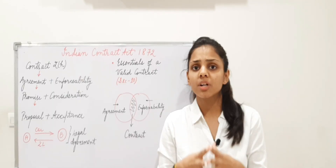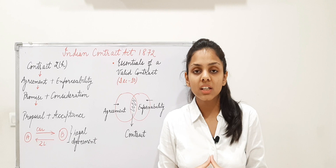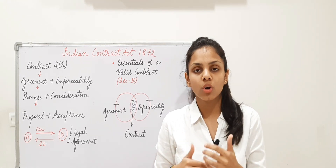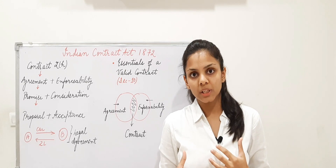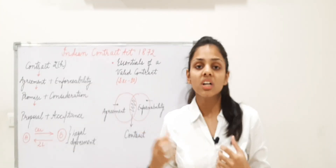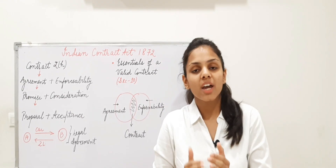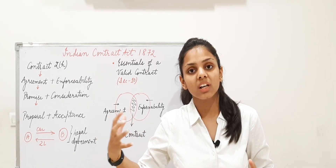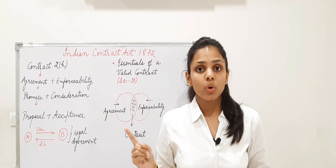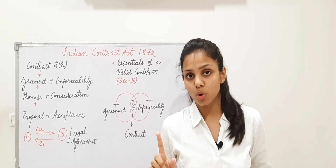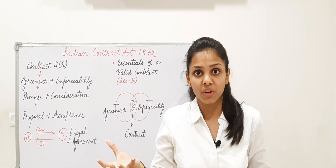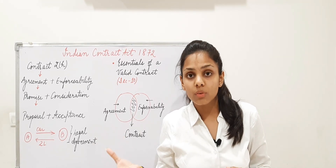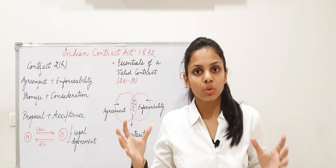Another example: if we go to a restaurant, we don't do an express contract. It is inferred from the conduct that if we are taking a meal, obviously we have to pay. We have to pay for the services rendered by the restaurant. So we call this an implied contract. Express means it may be either written or oral, and oral agreements are also valid — you cannot say that because something is not written down, it is not valid.